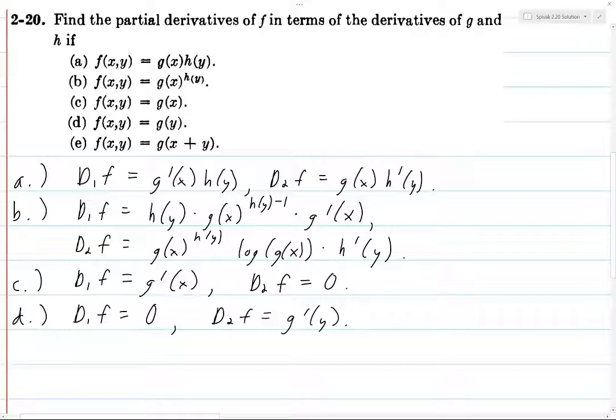And finally, we have, all right, so f of x, y is g of x plus y. So here, g is being, the thing inside of g is a function of x and y. So we have to use a chain rule. So D1 of f is going to be,